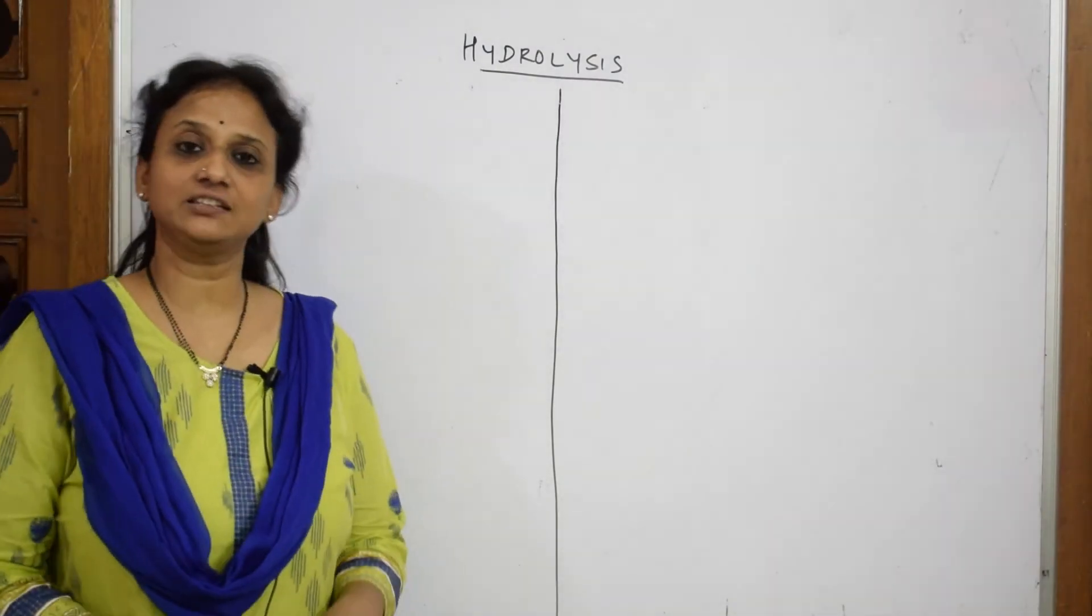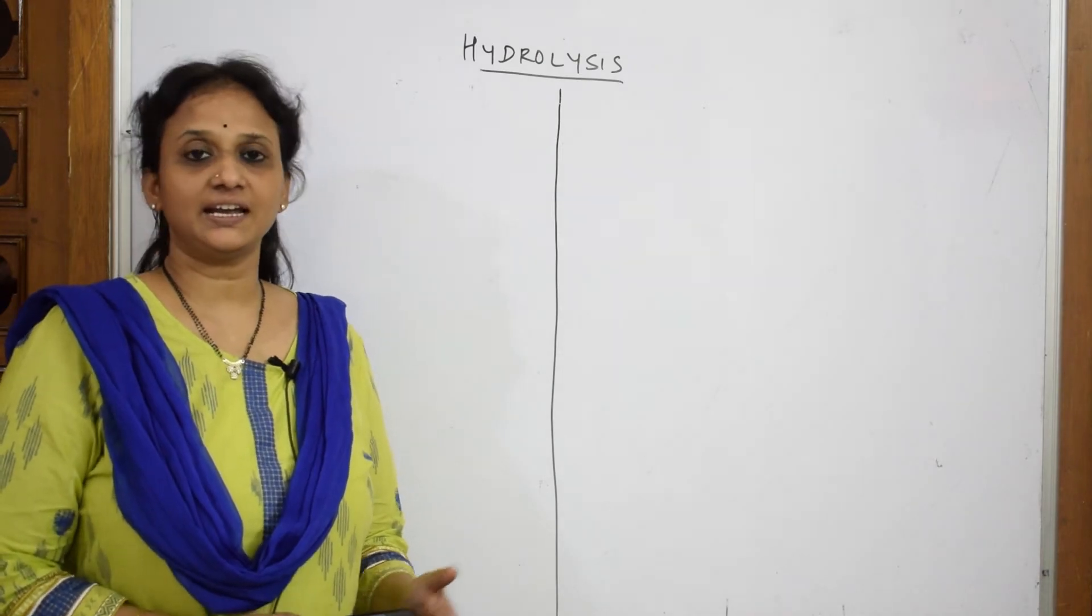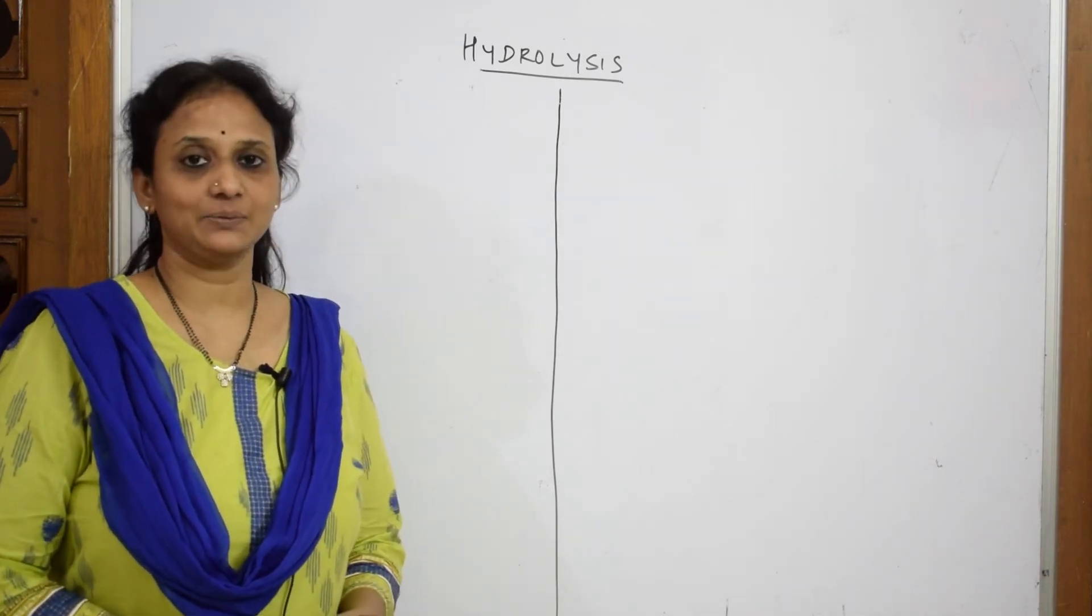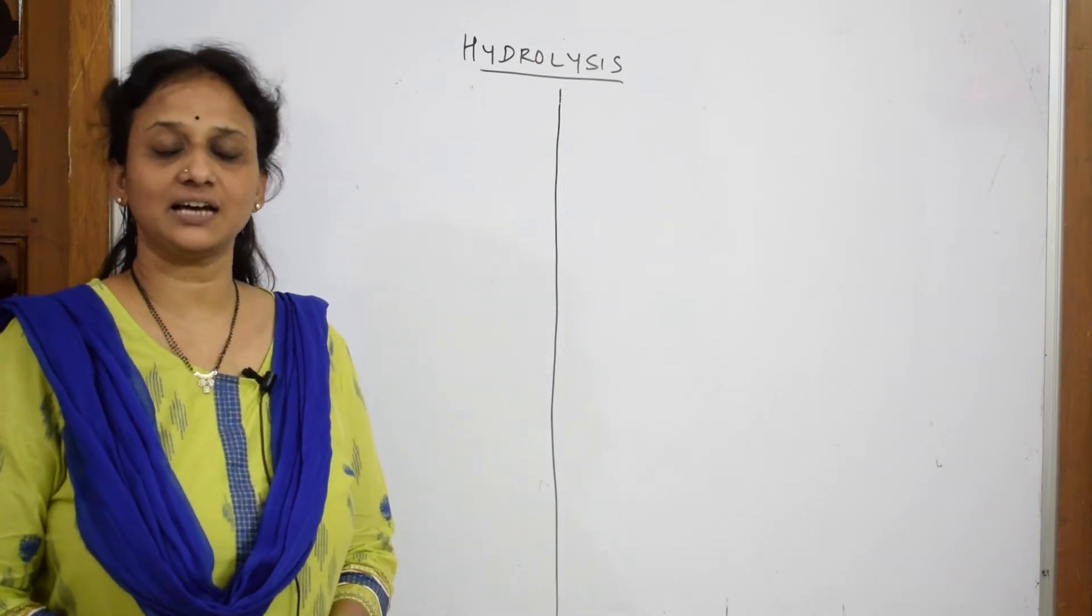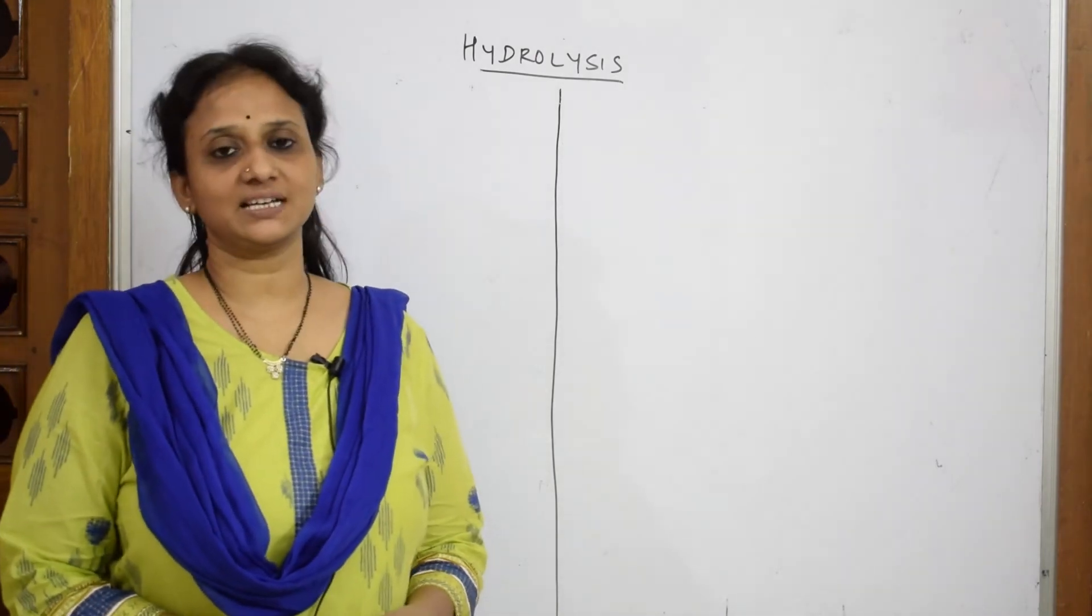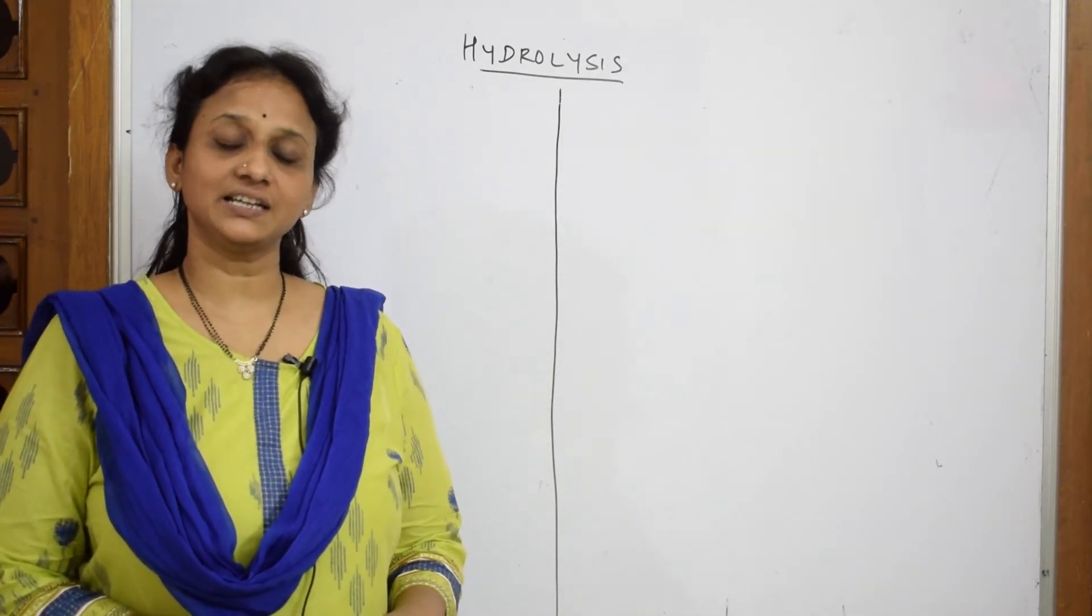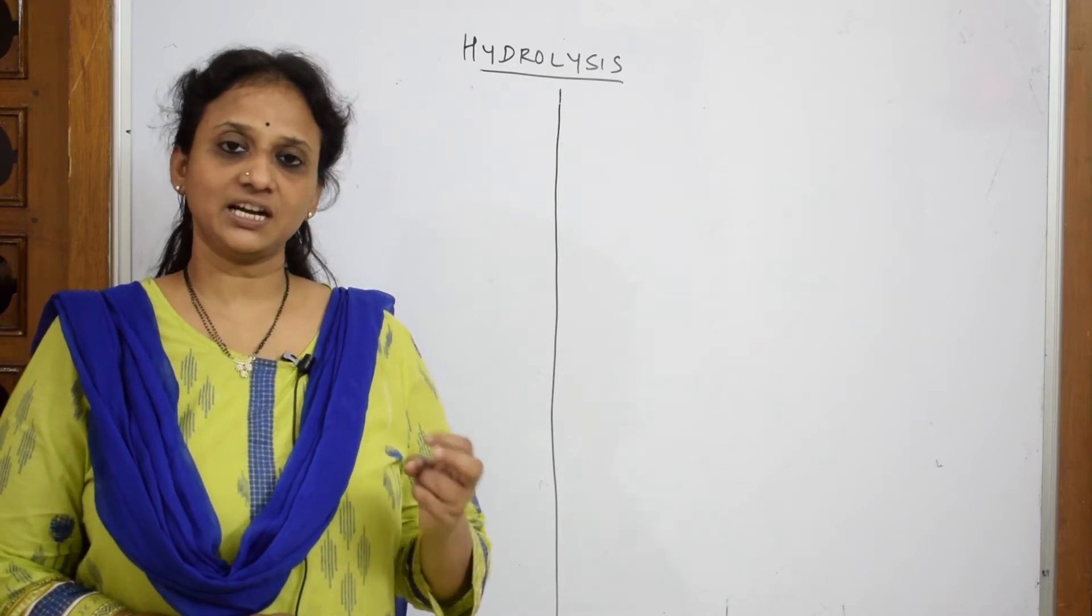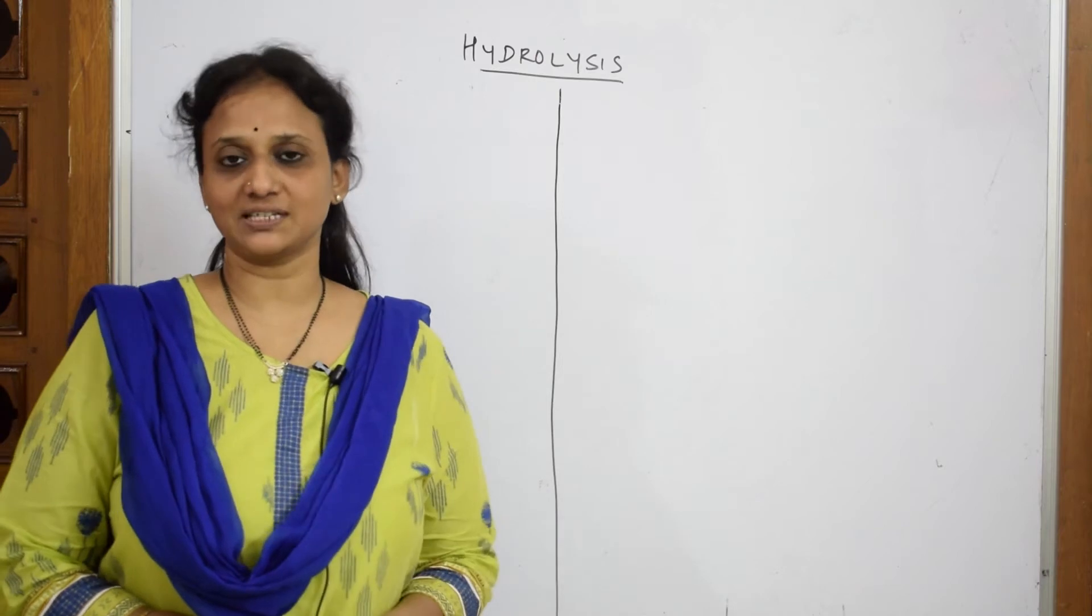We've already seen the oxidation of primary alcohols to aldehydes and ketones. We've also seen with alkyl benzenes that irrespective of the carbon chain, the alkyl group will get oxidized to the acidic group. For example, ortho-xylene had two alkyl groups, so it got oxidized to two carboxylic acid groups, which is phthalic acid.